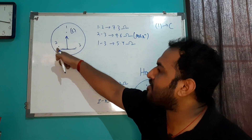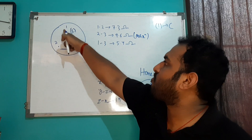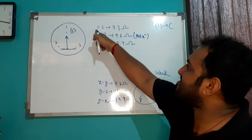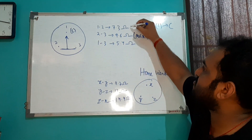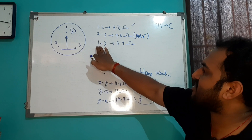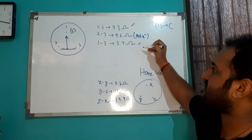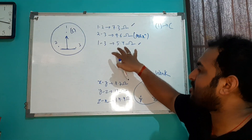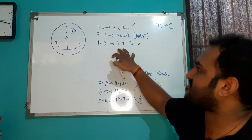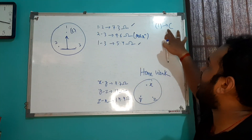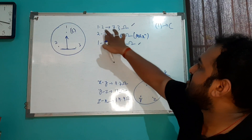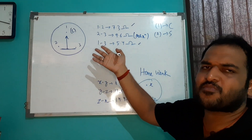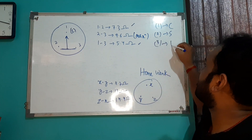Now, with terminal one identified as common, measure resistance from one to two — that gives 7.3 ohms — and from one to three — that gives 5.4 ohms. The higher value (one to two, 7.3 ohms) means two is your starting point, and the lower value (one to three, 5.4 ohms) means three is your running point.